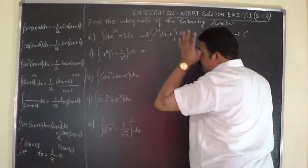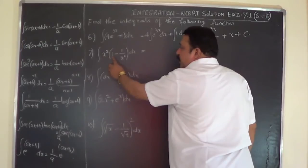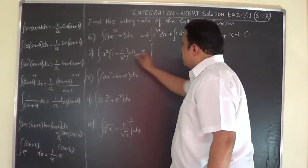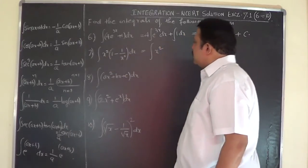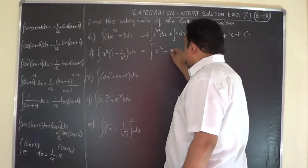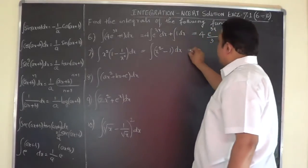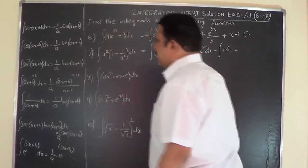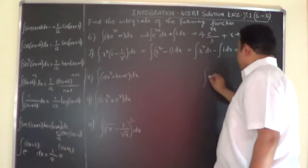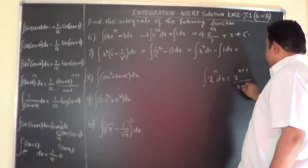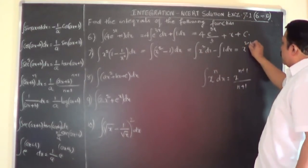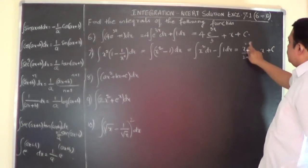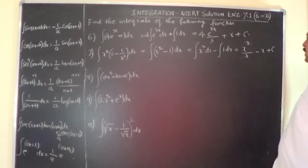If you look at this problem, there is scope for small simplification, because x² · e^(1) minus x² · e^(1/x²): x² and x² cancel, leaving behind 1. So we simplify: integral of (x² - 1) dx. Now separate: integral x² dx minus integral 1 dx. Integrating x^n gives x^(n+1)/(n+1), so x² dx gives x^3/3, minus x, plus C.